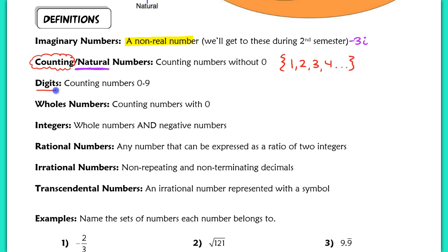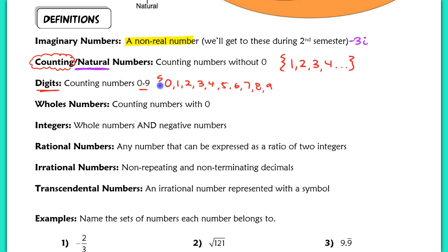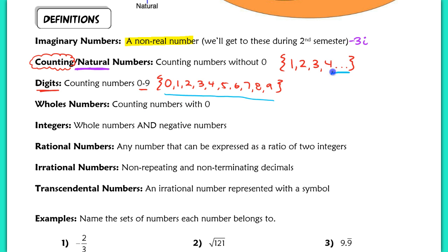Digits are only the counting numbers including 0 — so 0, 1, 2, 3, 4, 5, 6, 7, 8, 9. There are only 10 of them. When I write natural numbers with dot dot dot, it means the set continues on forever, whereas the digits have a closing bracket showing there are only 10.